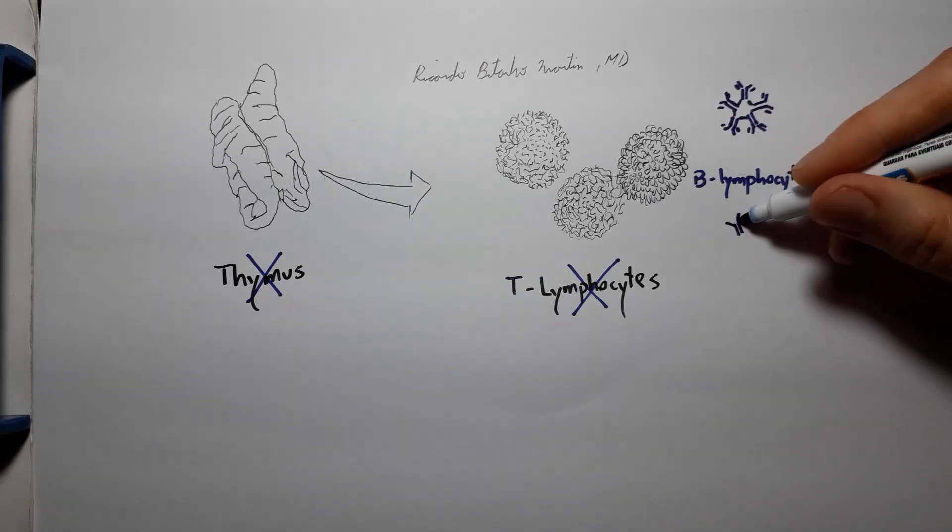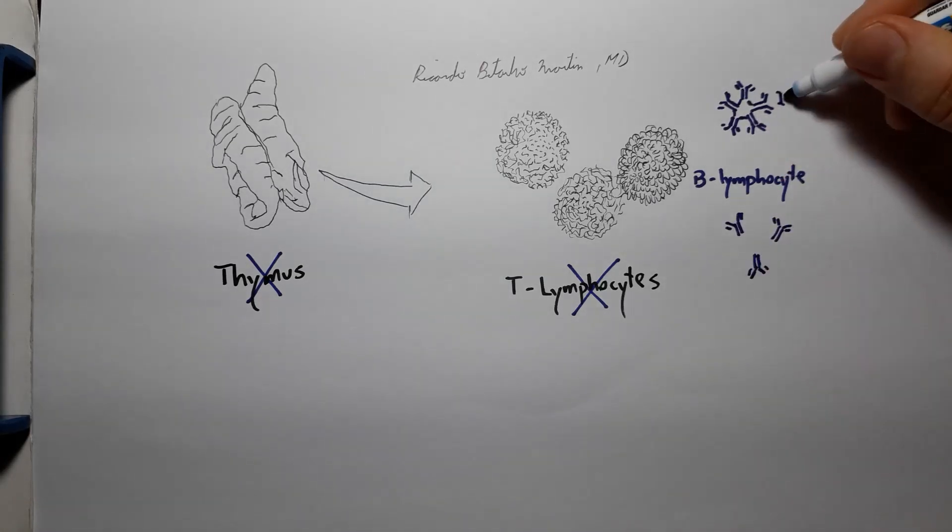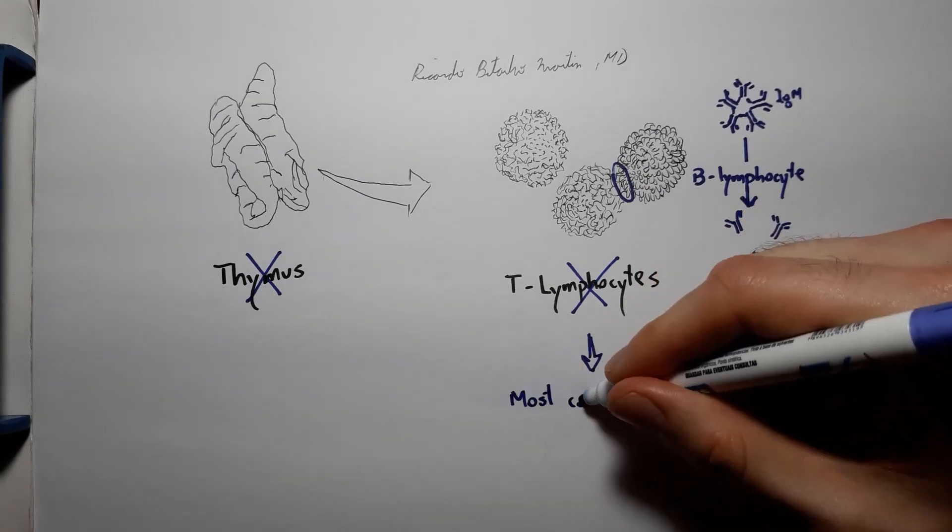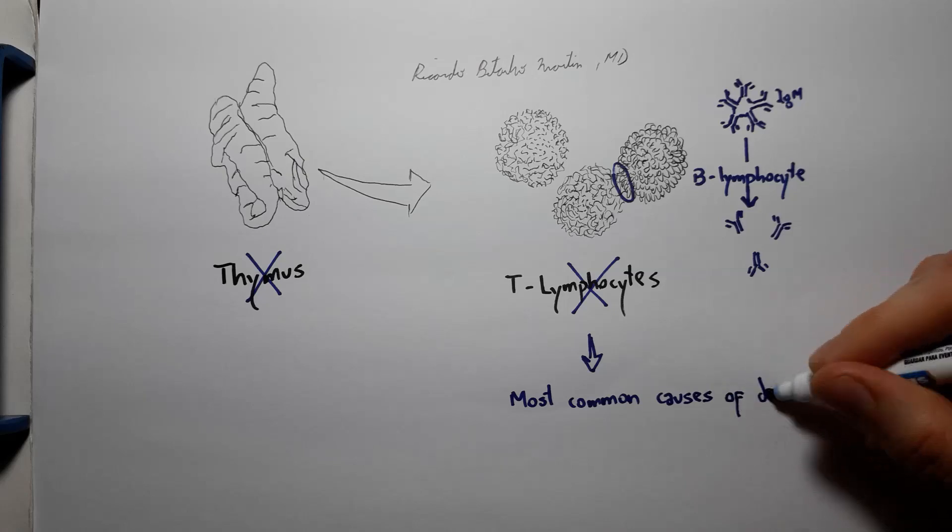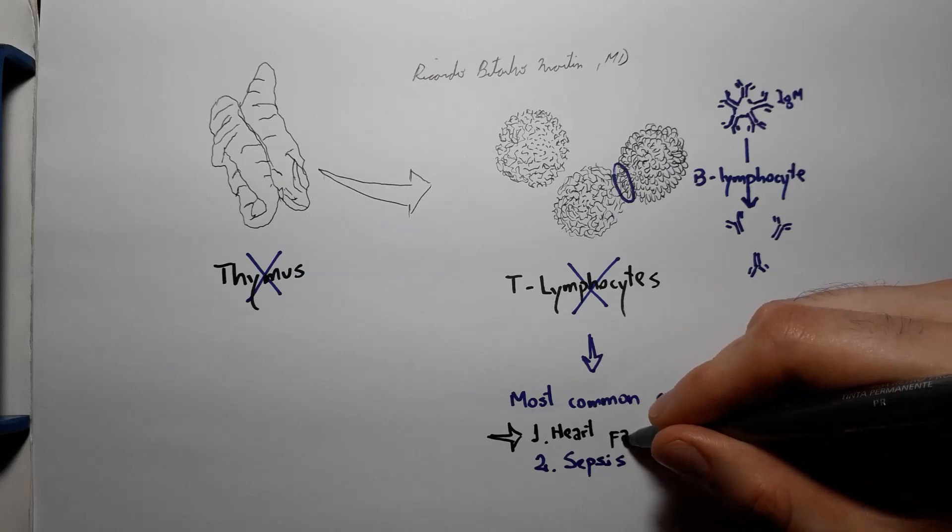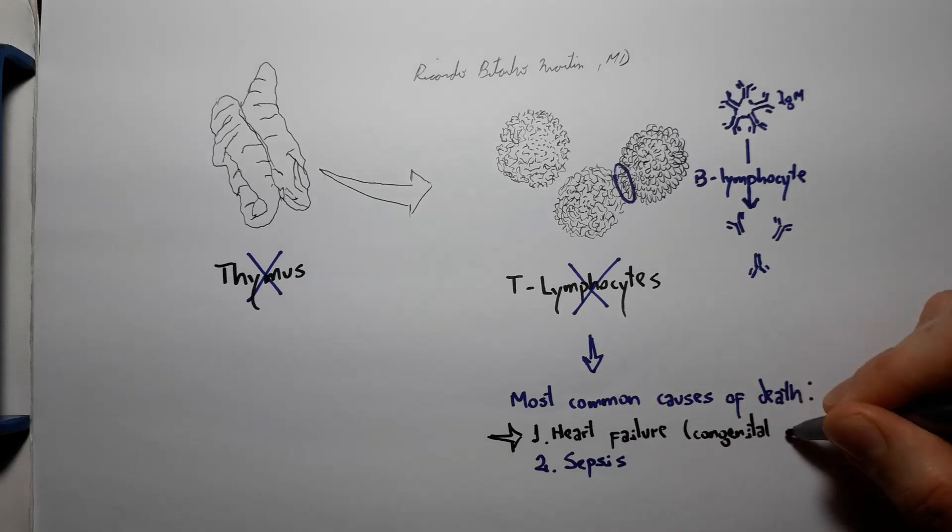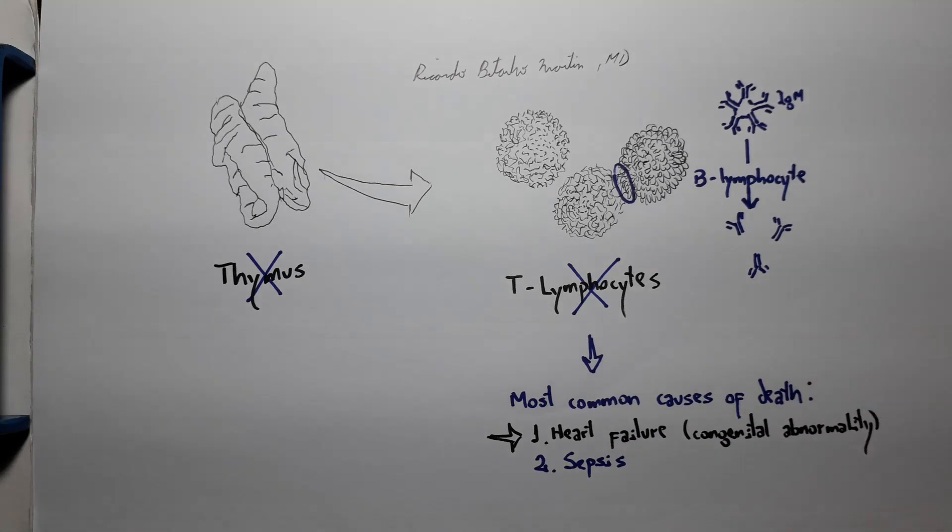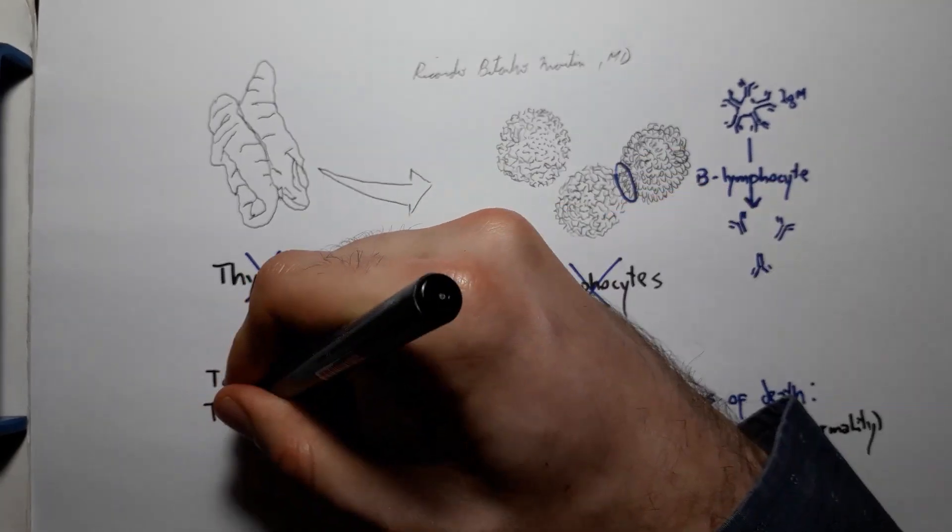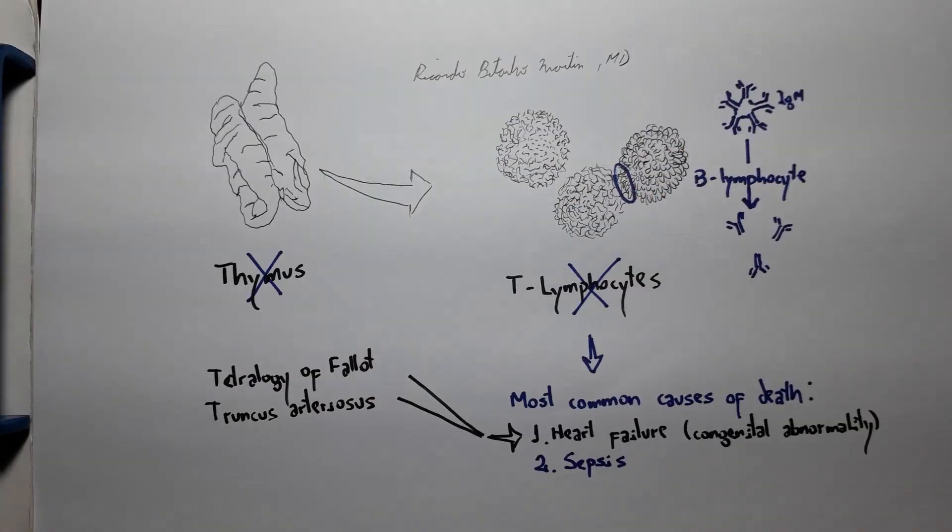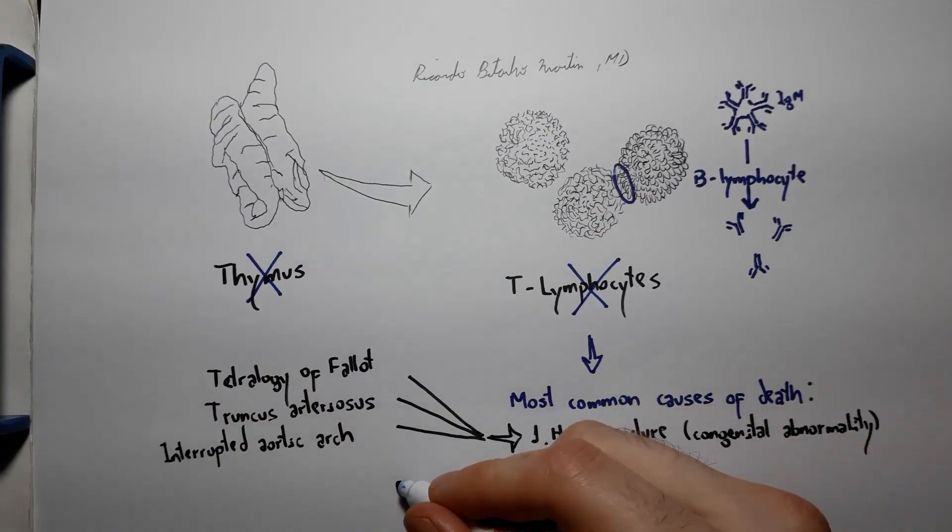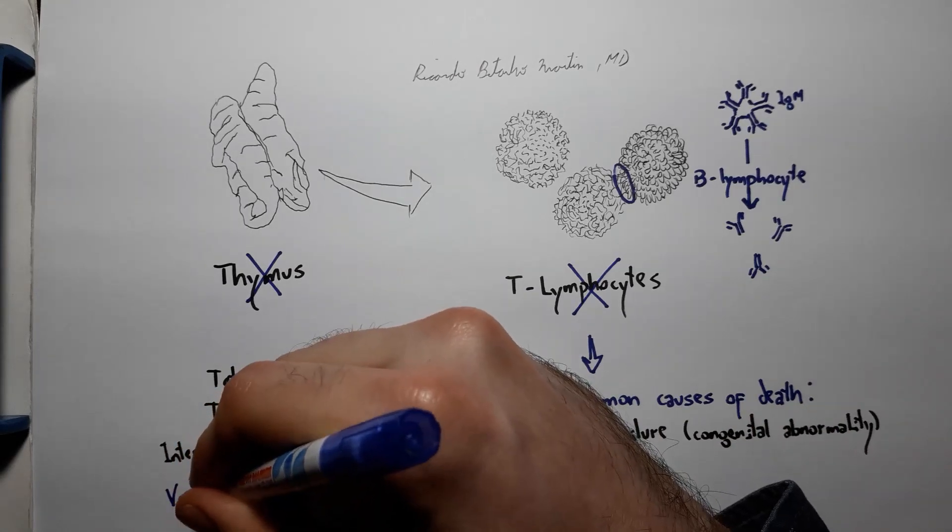Due to the immunodeficiency, sepsis is the second most common cause of death in patients with DiGeorge syndrome. The first is heart failure from the cardiac malformations. The most common ones are tetralogy of Fallot, truncus arteriosus, and interrupted aortic arch in infancy, and ventricular septal defect, pulmonary atresia with ventricular septal defect, and other conotruncal defects after two years of age.